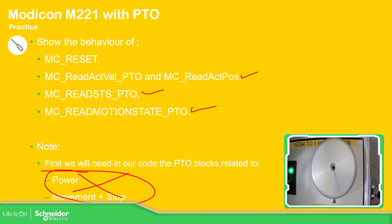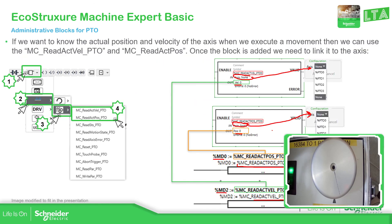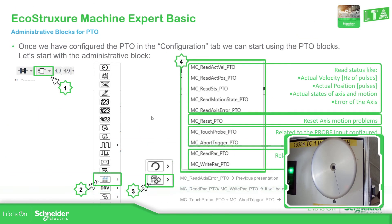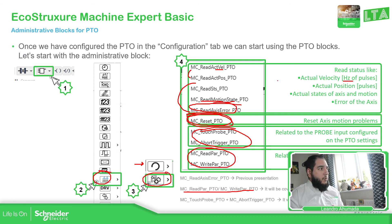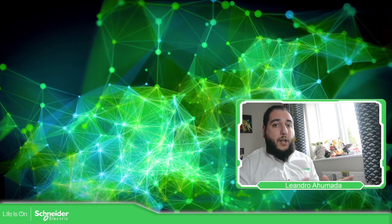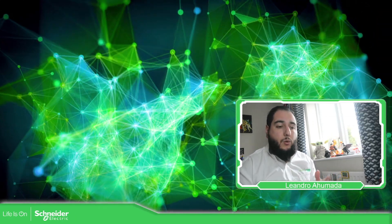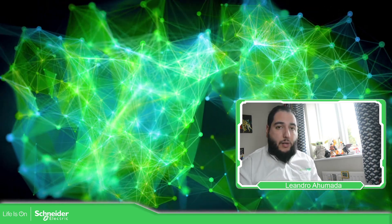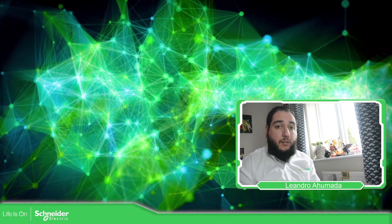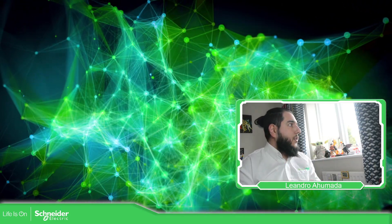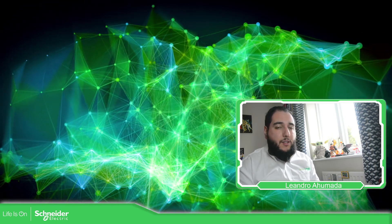So basically we have seen the different administrative blocks that we have. The idea of the read and write parameters — we're going to see that in more detail later because it's going to take more time. What we have done so far is to see the different administrative blocks that you must have in your application: how to know the status of the axis, how to reset if there is a problem, and how to know the actual position and velocity of the axis. Thank you very much for watching this video and I'll see you on the next one.